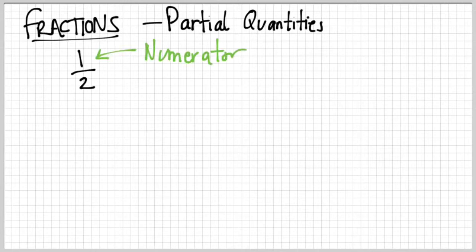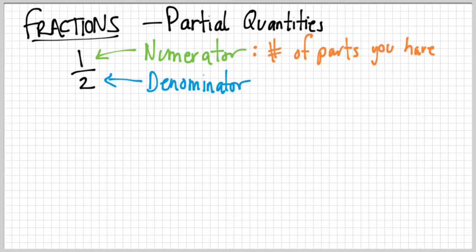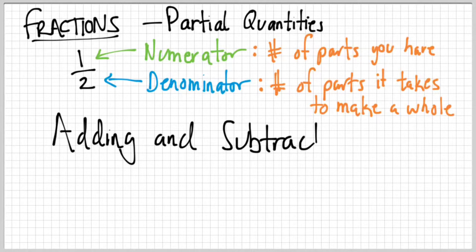Fractions look like this: one number over another. The number on top is called the numerator, the number on the bottom is called the denominator. The numerator is the number of parts you have. So this fraction here — one half — we have one part, just one piece. Pizza is your classic fraction example: you have one piece of pizza. The denominator is the number of parts it takes to make a whole, so two pieces makes an entire pizza.